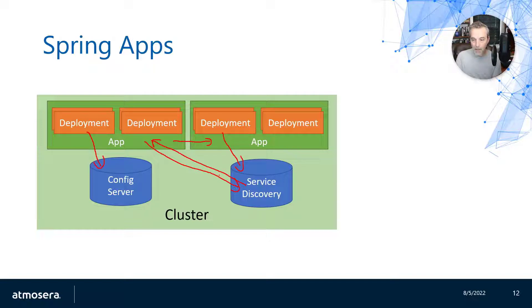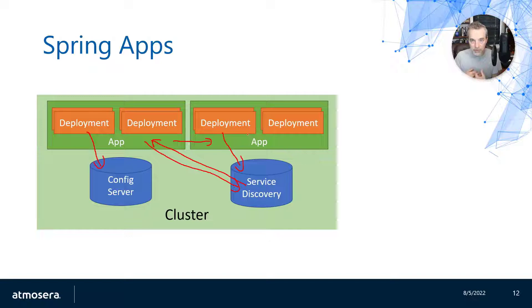It can do that simply by going to the service discovery, getting back that endpoint, and then making a direct call over a common channel — typically HTTP — to this other service that's running in the cluster. It will be able to talk to that service and tap into the functionality embedded in that service. This is a very common pattern used in microservice architecture as well.